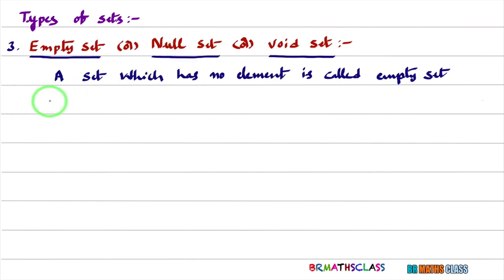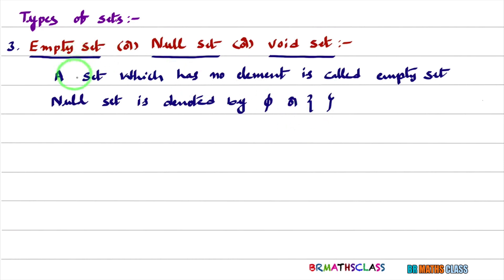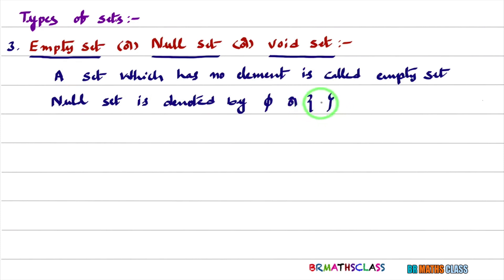Null set is denoted by phi — written as PHI — or we will write just simple empty brackets and won't write anything inside. So a set which has no element is called empty set. Null set is denoted by phi or simply we will write only brackets with nothing in between them.